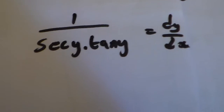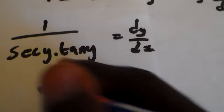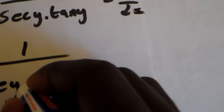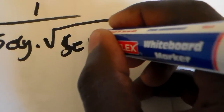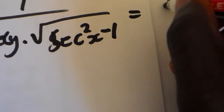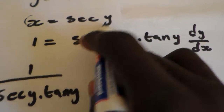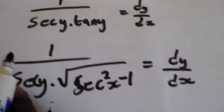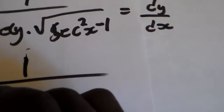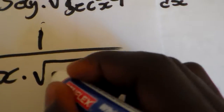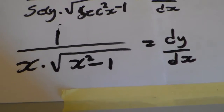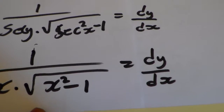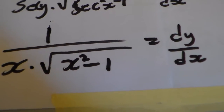We substitute the value of tan y with the square root expression, giving us 1 over sec y multiplied by the square root of sec squared x minus 1, which equals dy over dx. Going backwards, since x equals sec y, we substitute sec y with x, giving us 1 over x multiplied by the square root of x squared minus 1, equal to dy over dx. Therefore, the derivative of arc sec x equals 1 over x times the square root of x squared minus 1.